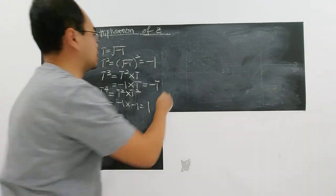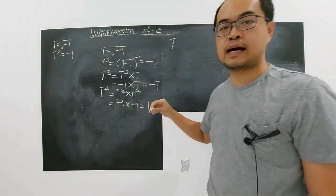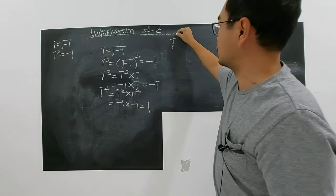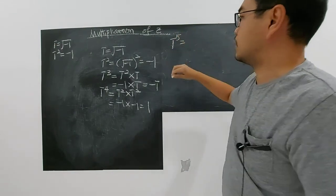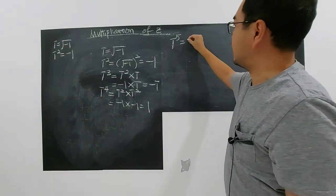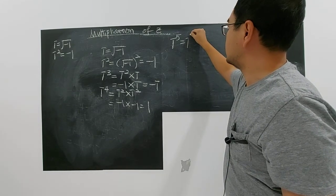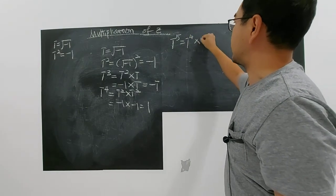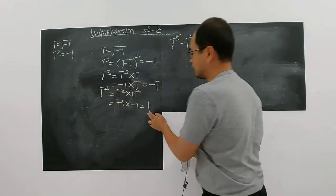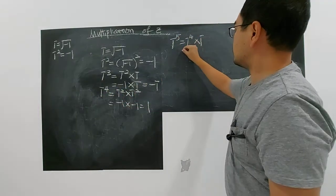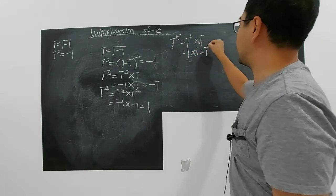How about i to the power of five? — and no, not the processor, not the i7! i to the power of five is i to the power of four times i. Since i to the power of four is one, one times i gives you i. So you're back to i.